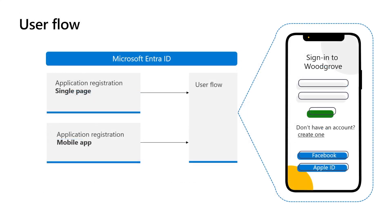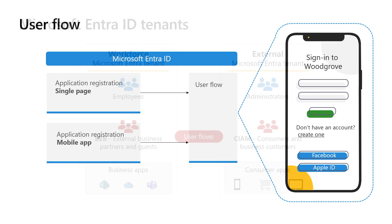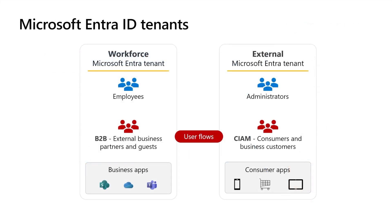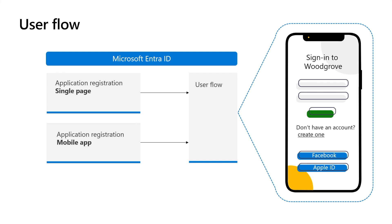Now that we've walked through the registration experience for the tenant, the next step is to create a user flow and link it to the application registration. The user flow defines and controls the user sign-in experience — like the authentication method or whether self-service sign-up has been enabled. User flows are widely used for external identities for both external tenants as well as workforce tenants in B2B account settings. Each application can have just one user flow, but if you have several applications, you can use a single user flow for all of them, or create multiple user flows for different experiences. User flows are applicable for interactive applications, so you don't need to link your web API registration to a user flow.